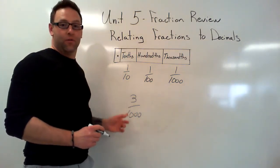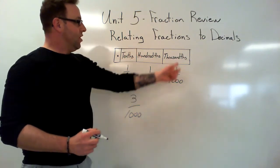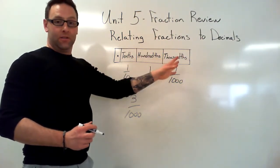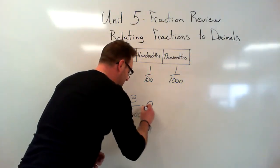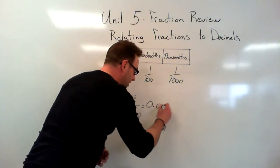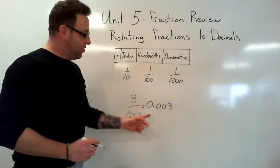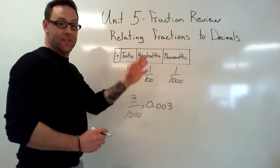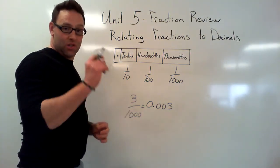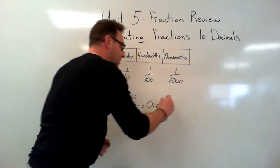If I have 3 over 1000, that's over here. We know there's got to be three different place values. So what we have to have is our 0 and three place values. Now these zeros are important because they keep this place value. This is 3 thousandths, which is 3 over 1000, which is a small fraction.